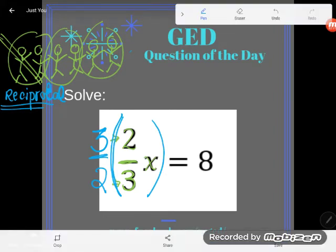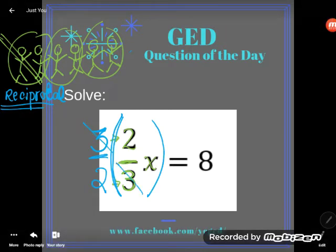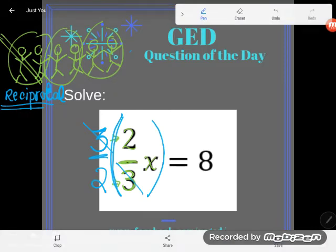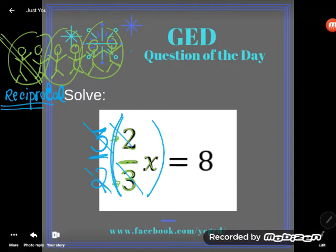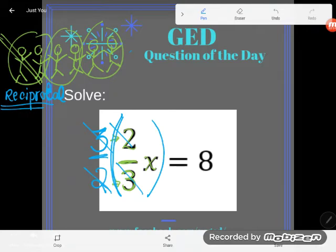Okay, it's known as its reciprocal, and it's a really nifty little trick because it'll get rid of a fraction multiplier. Why? Because multiplying by 3 and dividing by 3 cancel, 3 on the top, 3 on the bottom. And multiplying by 2 and dividing by 2 cancel, 2 on the top, 2 on the bottom, and so x would be alone.